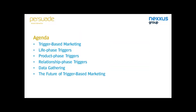In the next half hour I'll explain what trigger-based marketing is and lead you through three types of triggers: life phase triggers, product phase triggers, and relationship phase triggers. After that we'll have a quick look at where you can get the data you need to run these programs, and a look at the future of trigger-based marketing to see where we are heading.